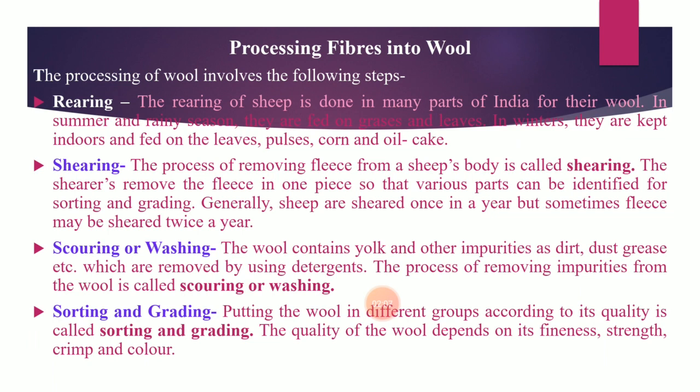Sheep are reared in many parts of India, mainly Rajasthan, Punjab, Uttar Pradesh, Himachal Pradesh, Haryana, Jammu and Kashmir, and Gujarat. They are herbivorous animals. Shepherds take the herd of sheep to the countryside for grazing. During summer and rainy seasons, sheep feed on grasses and leaves. But in winter they need good food, including leaves, corn, oil cakes, and mainly pulses. Pulses are protein-rich, and feeding protein-rich food results in good quality wool, since animal wool is made up of protein.